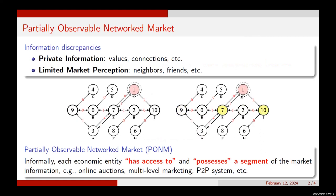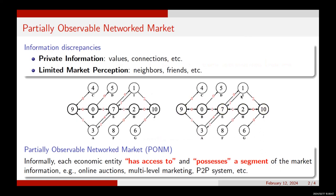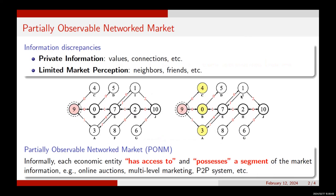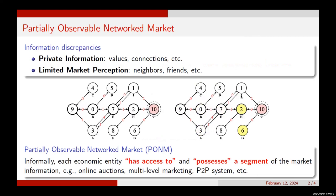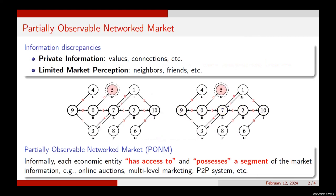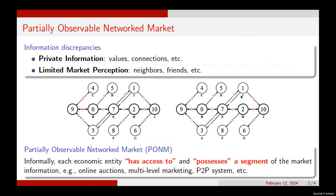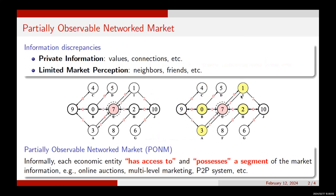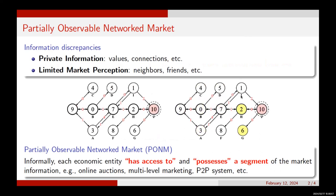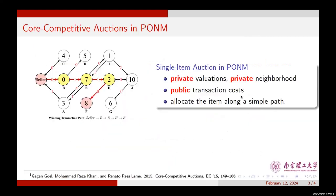We define the aforementioned markets as partially observed networked markets, short for PERM. In this kind of market, each economic entity has access to and possesses only a segment of the market information.